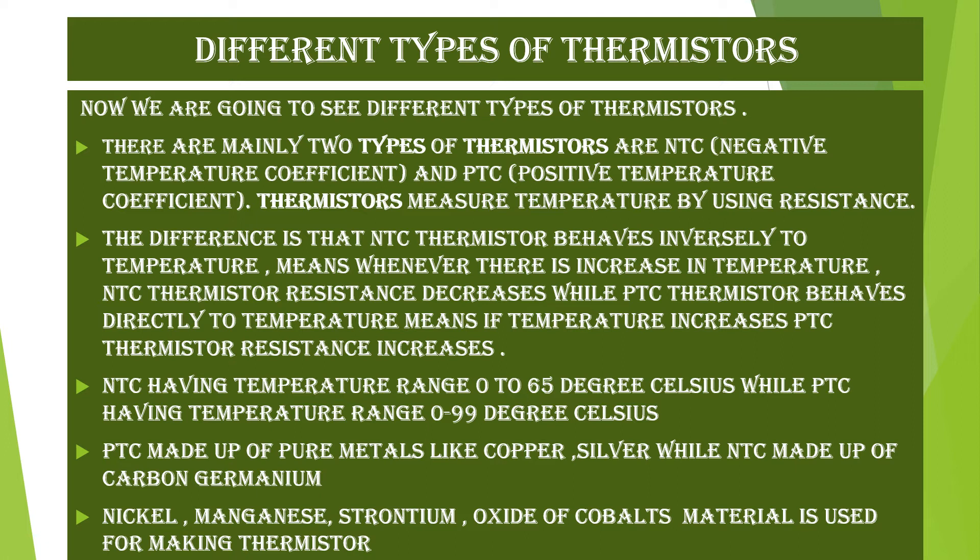The difference is that an NTC thermistor behaves inversely to temperature — whenever there is an increase in temperature, NTC thermistor resistance decreases. While a PTC thermistor behaves directly to temperature — if temperature increases, PTC thermistor resistance also increases. NTC has a temperature range of 0 to 65 degrees Celsius.